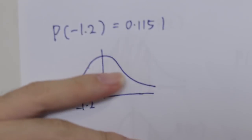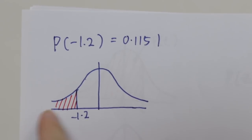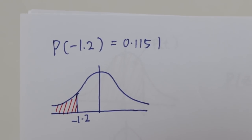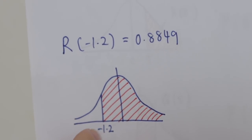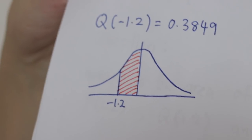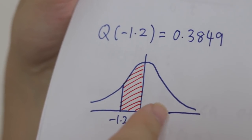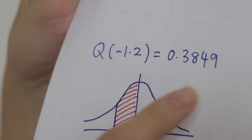Before ending, one last point: when your T value is negative, the same idea applies. For P negative 1.2, you go to −1.2 on the x-axis and shade all the way to the left. For R negative 1.2, it's the opposite — from −1.2 all the way to the right. For Q negative 1.2, the value is the same as Q positive 1.2 because the bell shape diagram is totally symmetric.